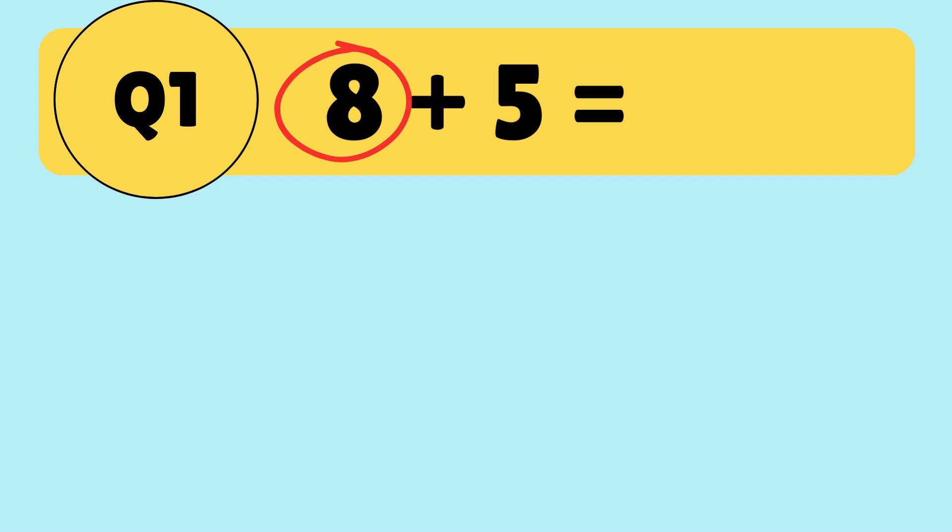Which one is the smaller number here? Yes, 5 is the smaller number. So let us have 5 fingers up everyone. Now starting from 8, let's count up.